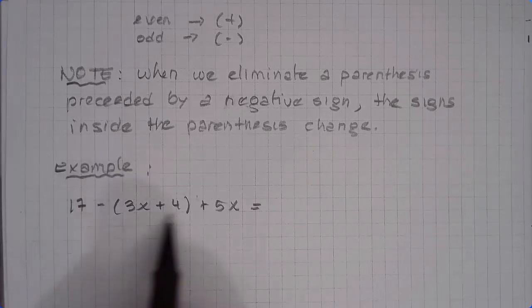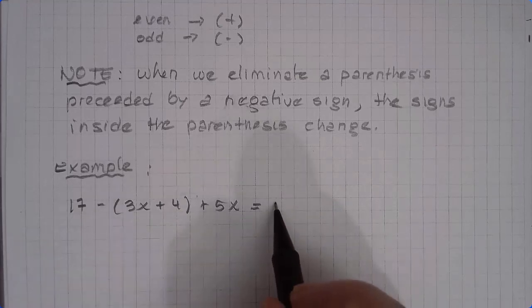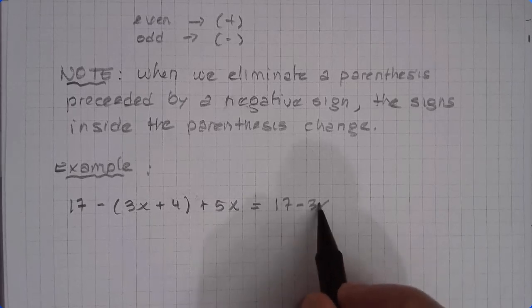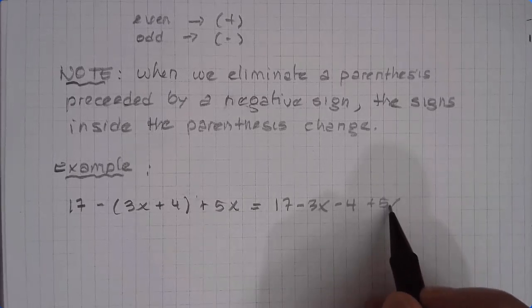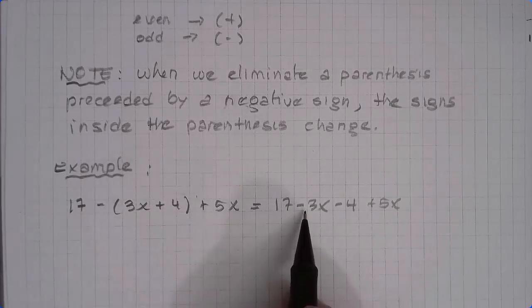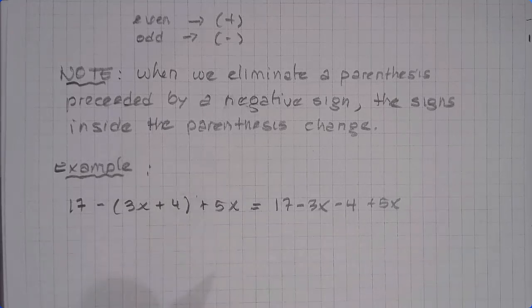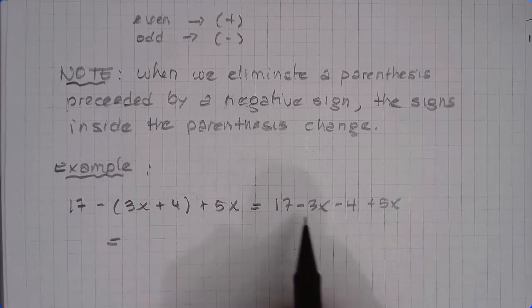When we eliminate this parenthesis that is preceded by a negative sign, what we get is 17 minus 3x minus 4 plus 5x. Notice that the 3x was positive here. Now it's negative. And the 4 was positive. Now it's negative. And of course, once we have done that, then we can combine like terms.